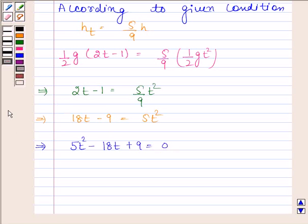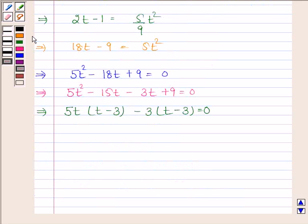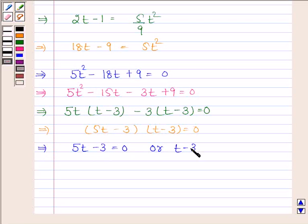This implies 5t squared minus 18t plus 9 is equal to 0. This implies 5t squared minus 15t minus 3t plus 9 is equal to 0. This implies 5t into t minus 3 minus 3 into t minus 3 is equal to 0. And this implies 5t minus 3 into t minus 3 is equal to 0. This implies 5t minus 3 is equal to 0 or t minus 3 is equal to 0.